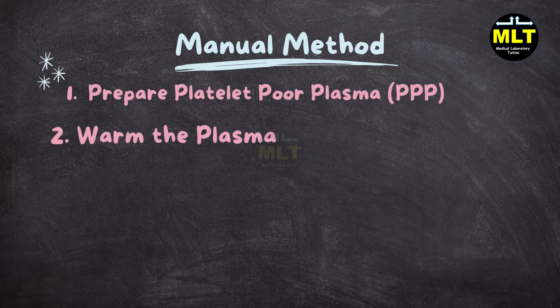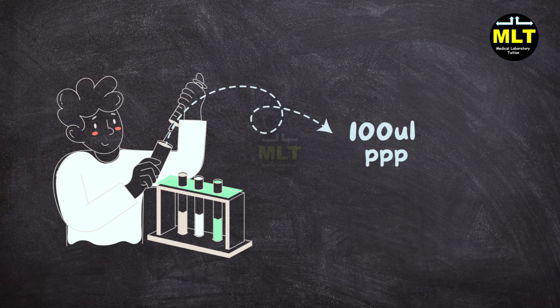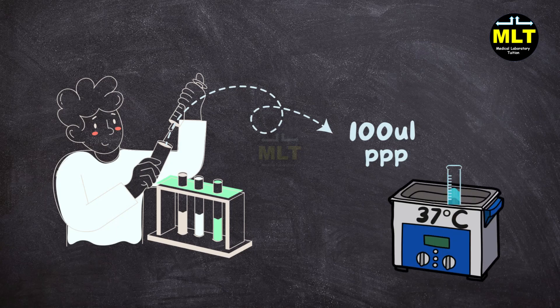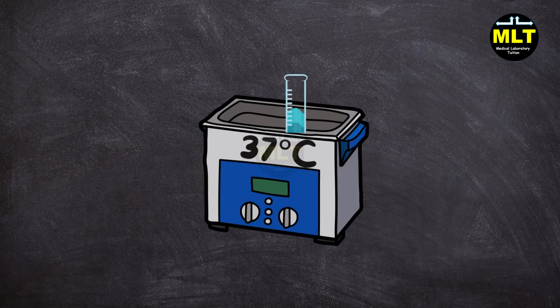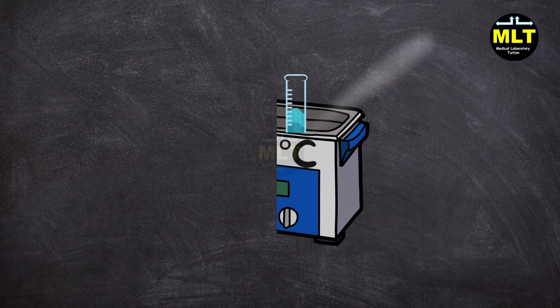Step 2: Warm the plasma. Take 100 µL of PPP and place it in a 37°C water bath or heating block for a few minutes. Keeping the plasma at body temperature ensures accurate clotting results.